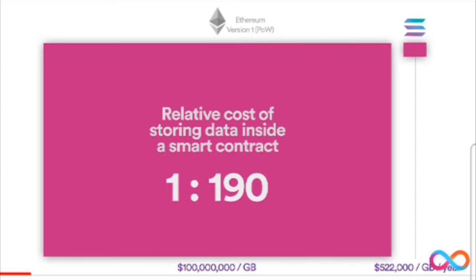On the right is the relative cost of storing a gigabyte of data on the Solana blockchain for a year when the price of one SOL is $150. The ratio is one to 190 — Solana has improved efficiency and reduced the cost of storing data on the blockchain by 190 times. Now let's zoom into the Solana block and compare it to Internet Computer. Just to point out, it's $522,000 a gigabyte — still a lot better than Ethereum, but still way too much.